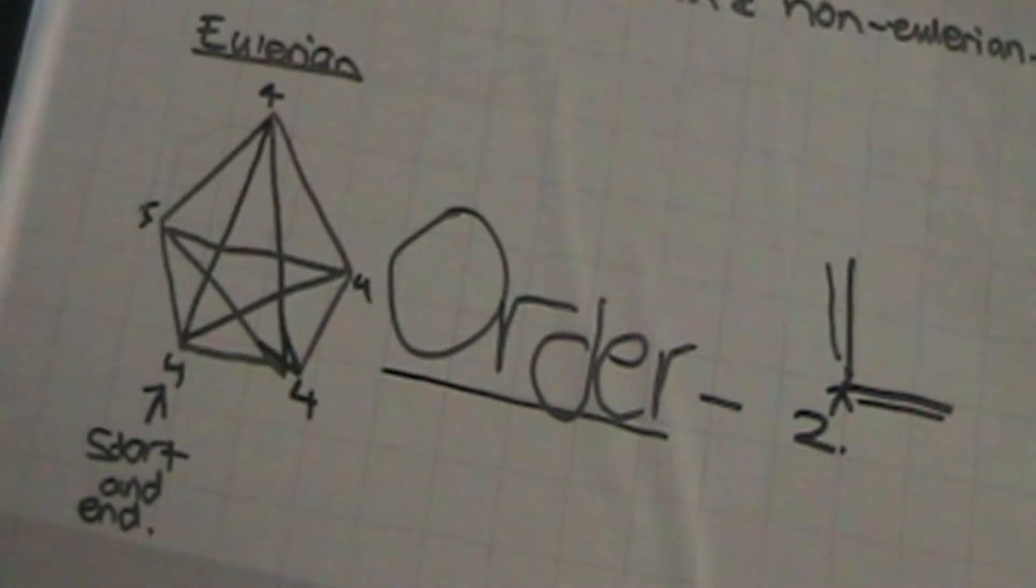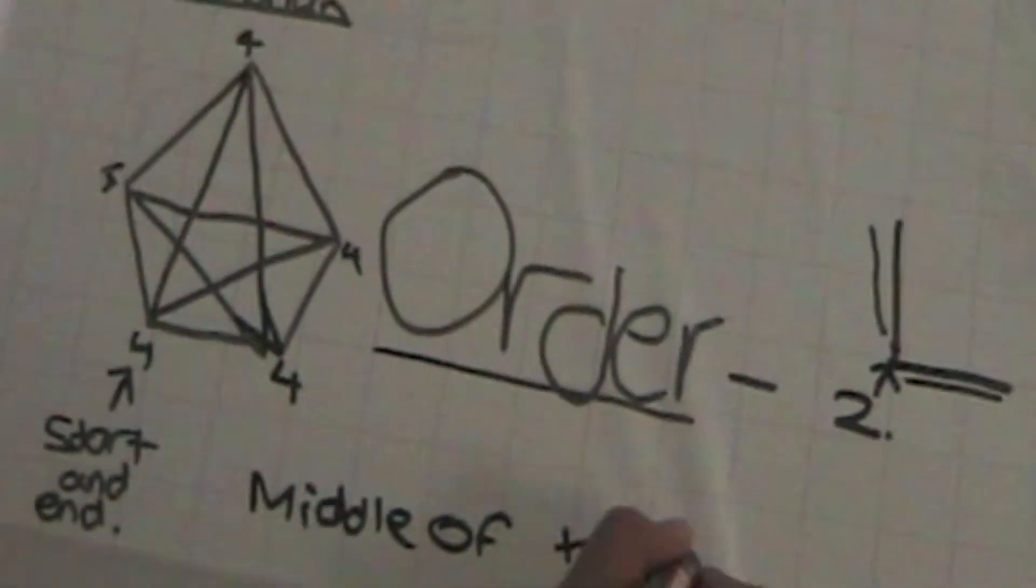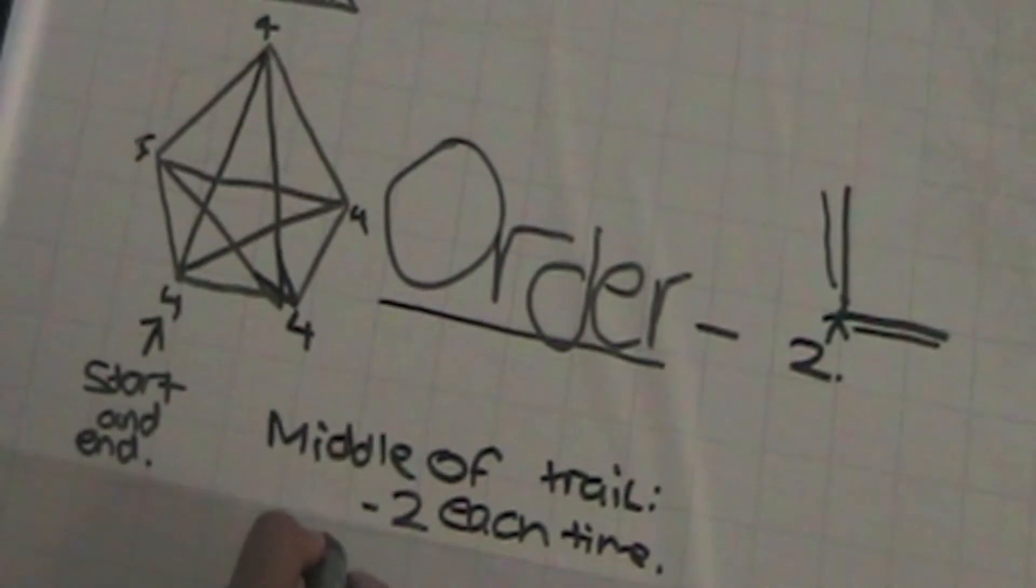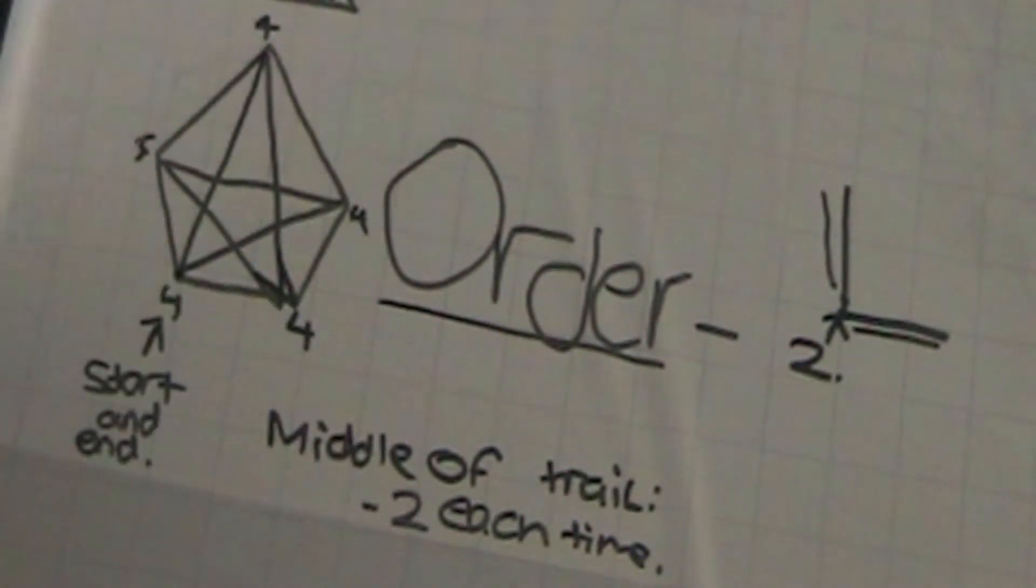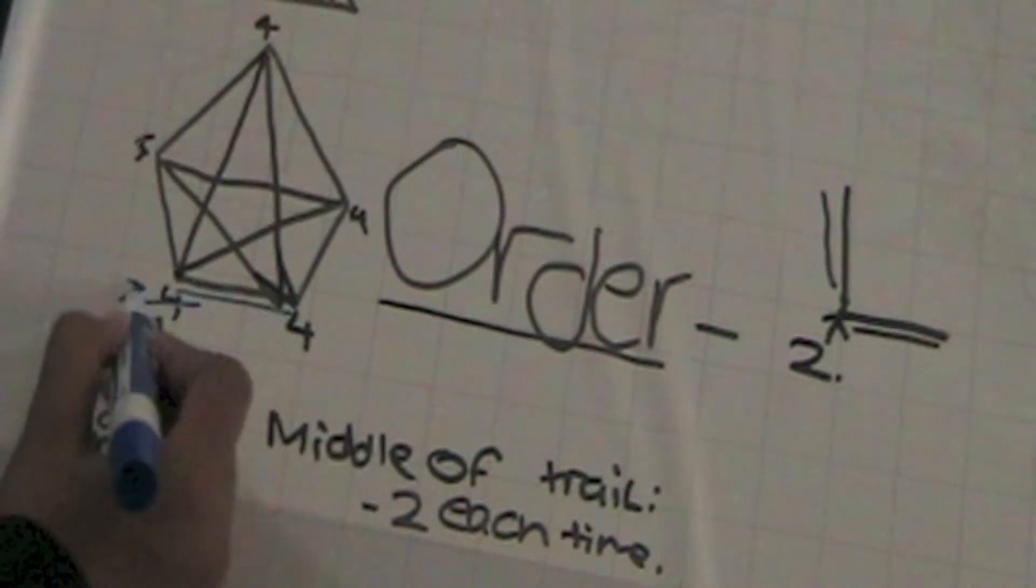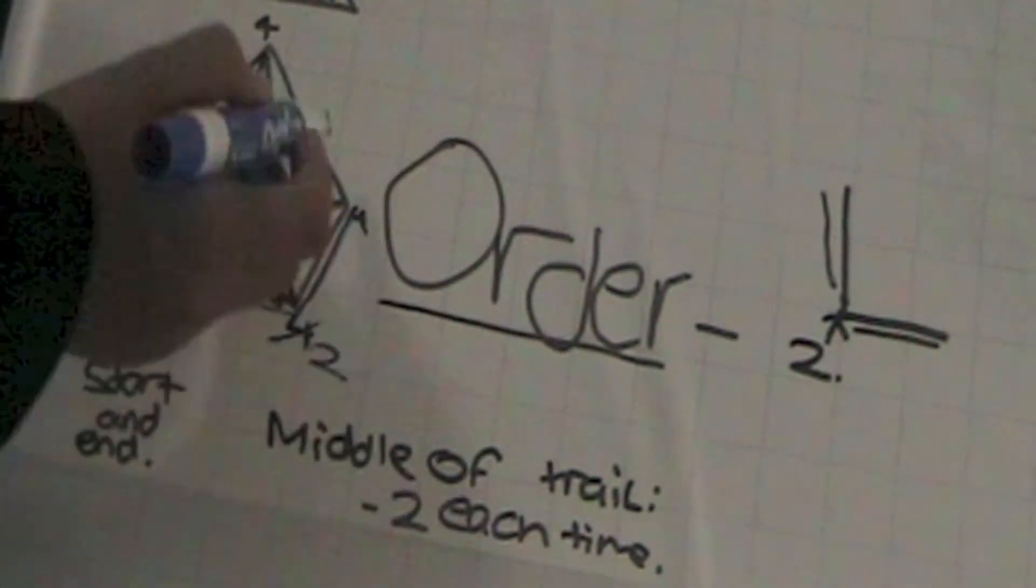The reason for this is that when we go through any vertex in the middle of the trail, the order will go down by two. At our start, the starting vertex goes down by one to three. Then at each vertex, we go down by two.